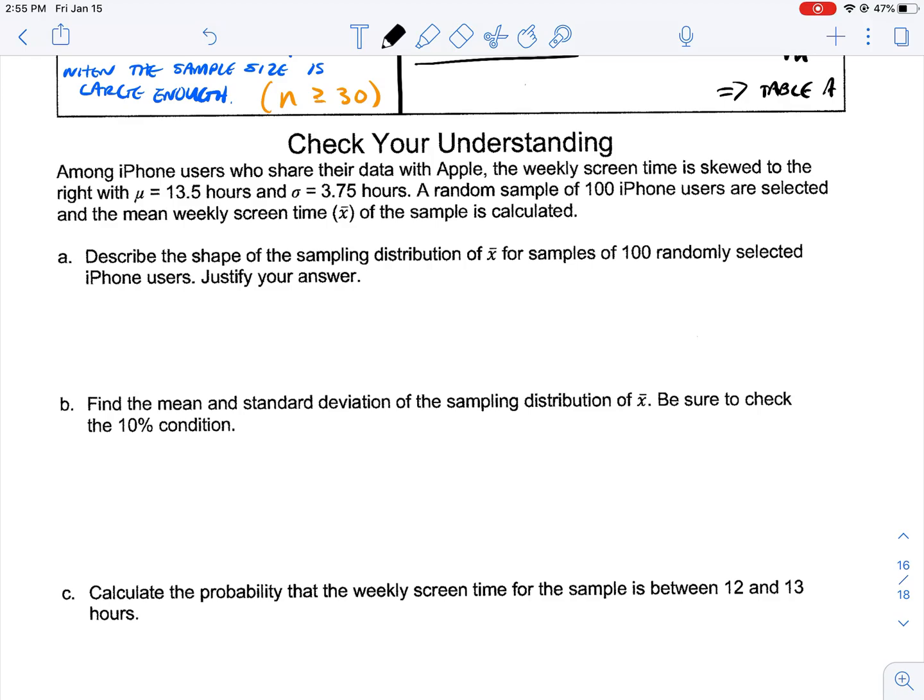Among iPhone users who share their data with Apple, the weekly screen time is skewed to the right with μ = 13.5 hours and σ = 3.75 hours. A random sample of 100 iPhone users are selected, and the mean weekly screen time of the sample is calculated. Describe the shape of the sampling distribution of x-bar for samples of 100 randomly selected iPhone users. Justify your answer.